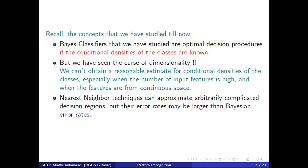If you have a bad estimate for your likelihood functions or the class conditional distributions, then even if you apply Bayes classifier, that may not work well, because the estimated likelihood function itself is bad. You are trying to apply Bayes rule or the MAP rule on top of that — then you are going to get bad results. You should have good estimates for prior probabilities and likelihood functions; then only you can have better results with your Bayes classifier.